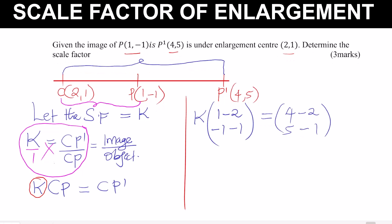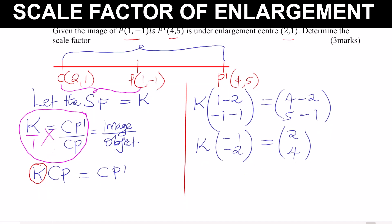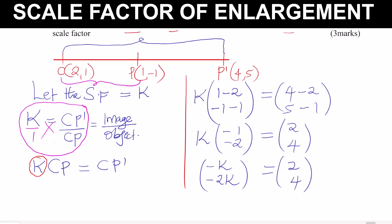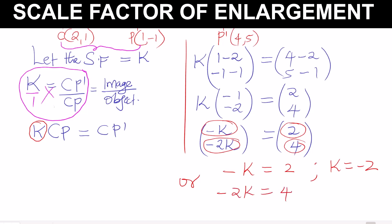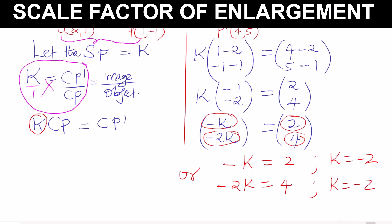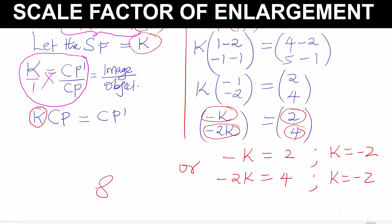So we have k × (−1, −2) = (2, 4). This gives us −k = 2, so k = −2, or from the second component, −2k = 4, so k = −2. Both components confirm the same answer. Therefore, the scale factor of enlargement is k = −2.